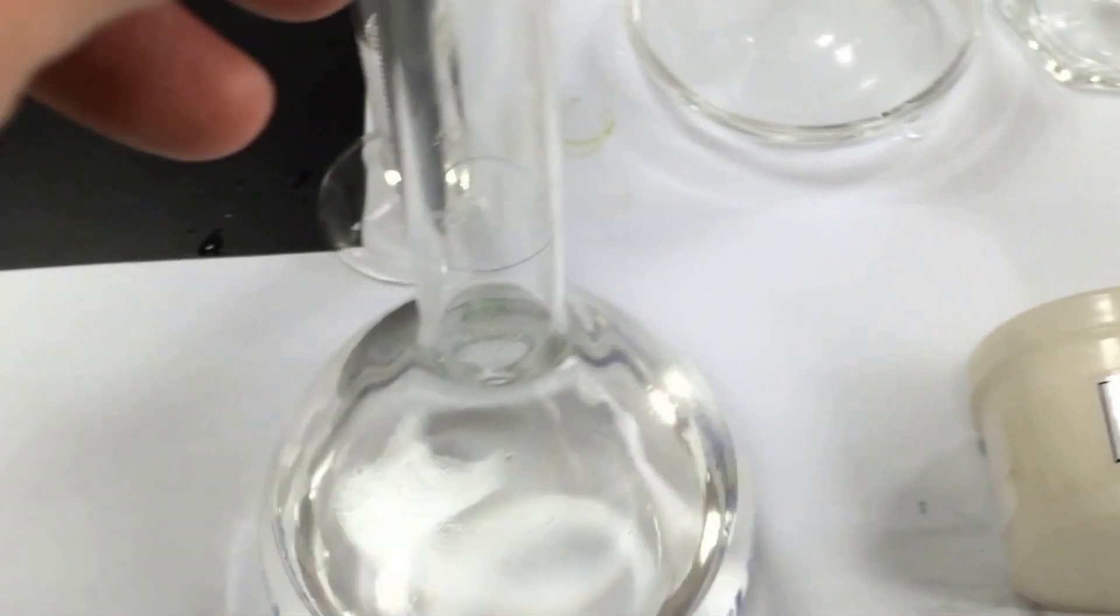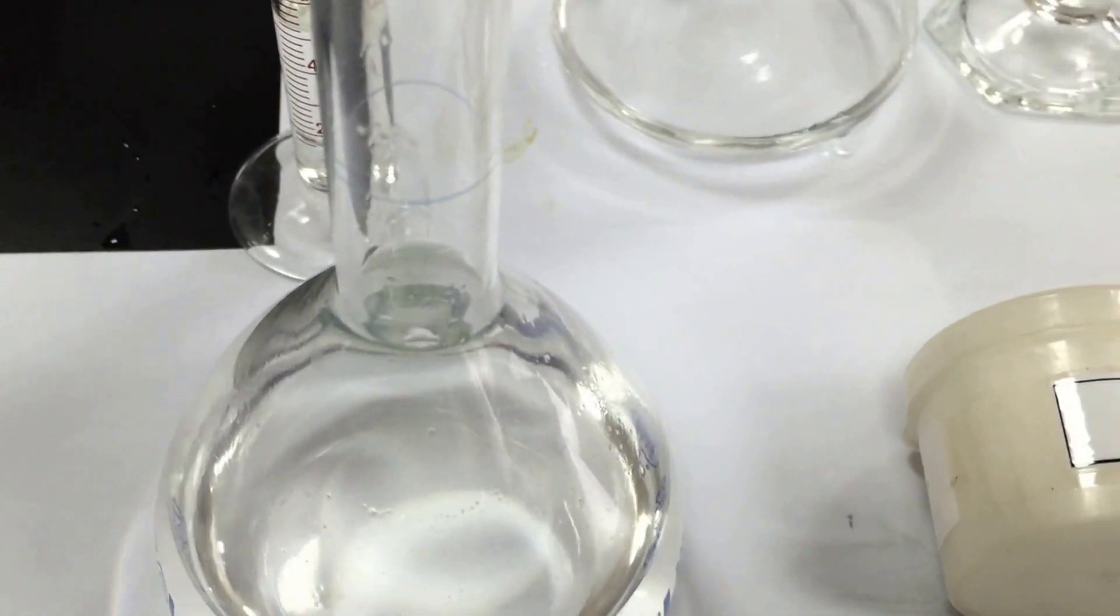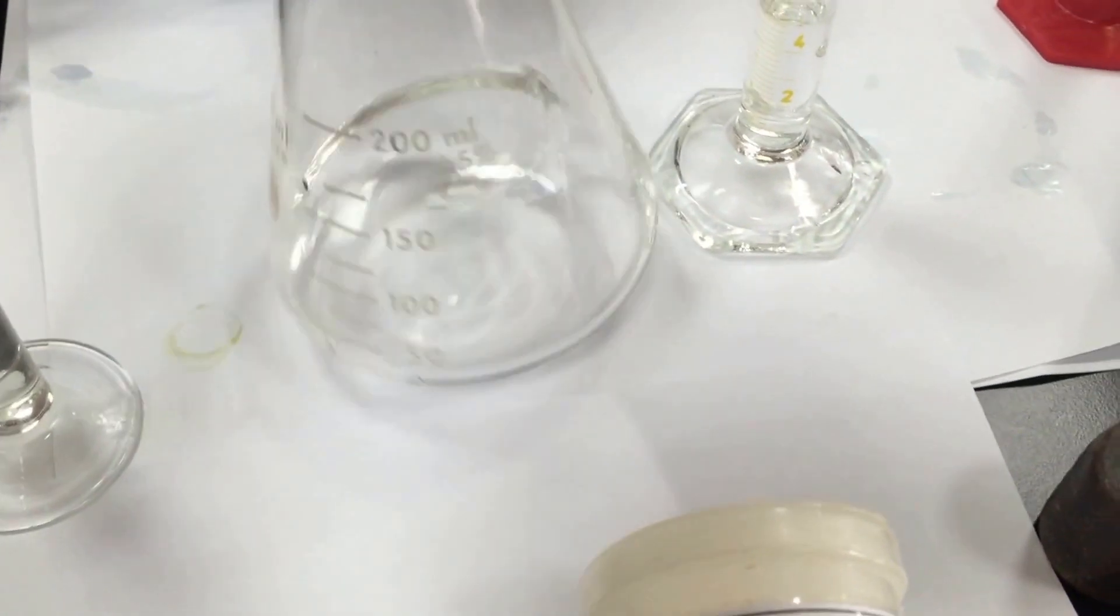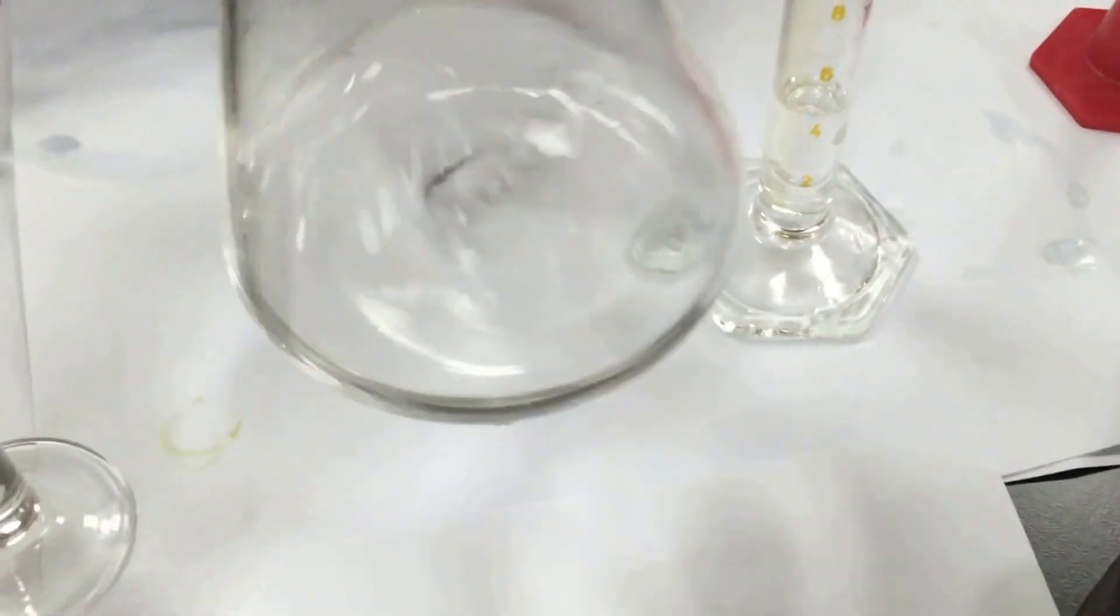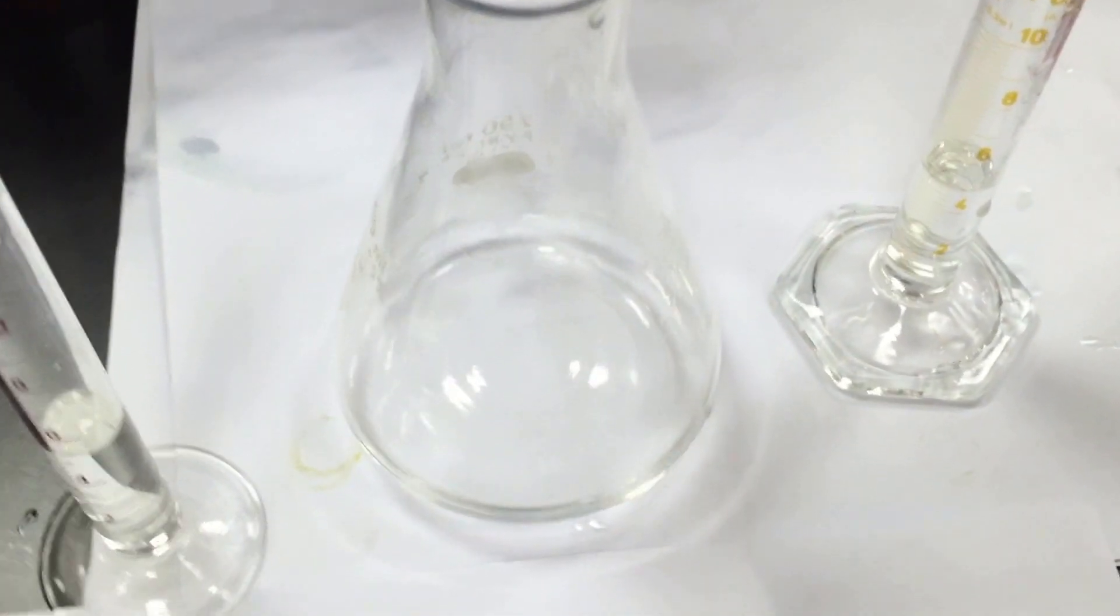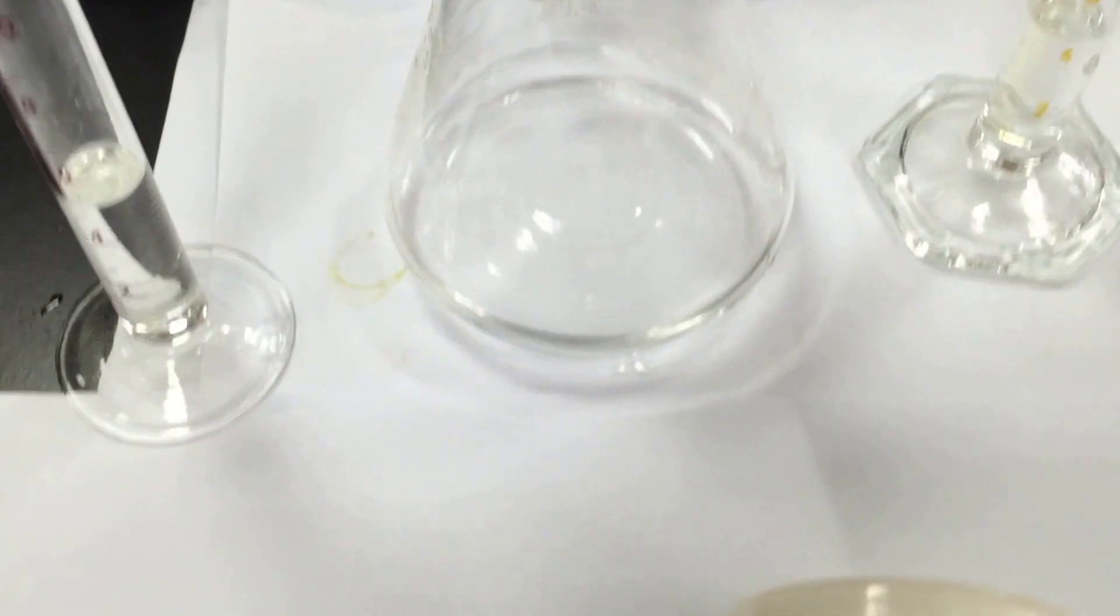I took a 25 milliliter aliquot of my saltwater solution and put it into this conical flask here, which is nice and clean. So we've got our subsample, our sample of sodium chloride, which presumably has some amount of iodate ion in it.